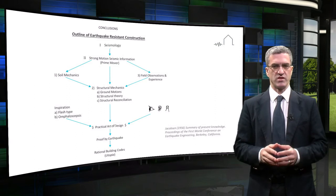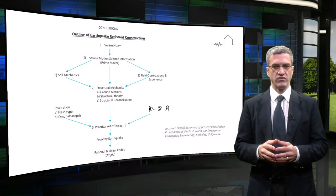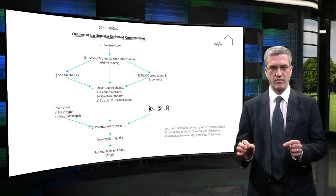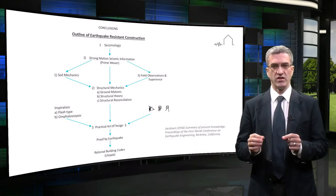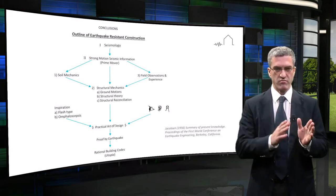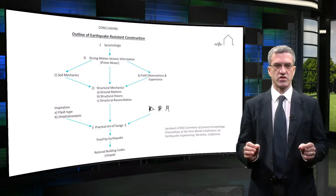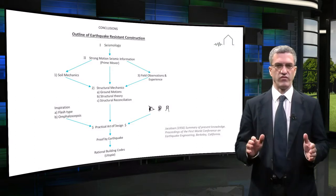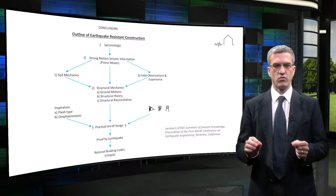Lateral design forces were specified, lower than expected maximum elastic force demands, in the belief that structural ductility would protect against collapse. As a typical example, the 1994 Uniform Building Code lists numerous structural systems, their permitted force reduction factor and building height limits. Numerous restrictions on regularity and structural detailing have evolved over the years in an attempt to ensure that the ductile behaviour assumed in design was achieved.